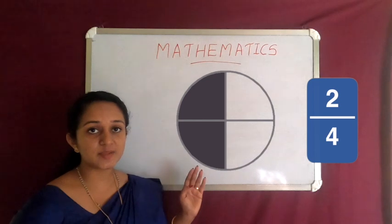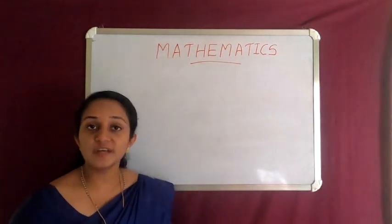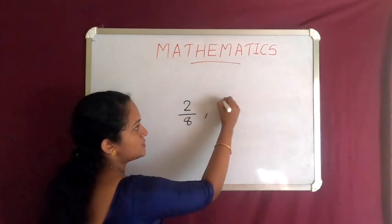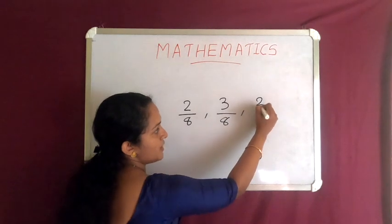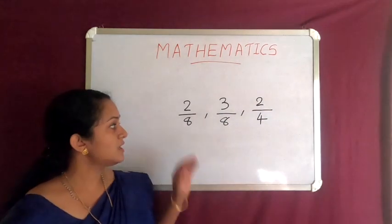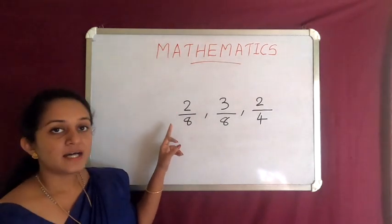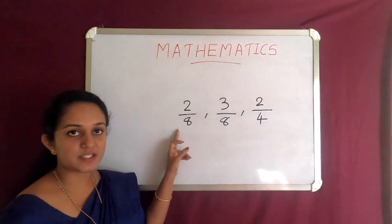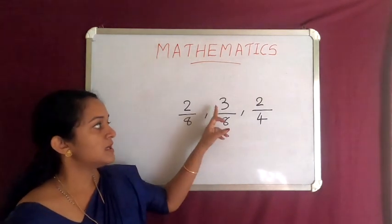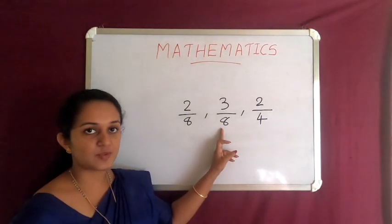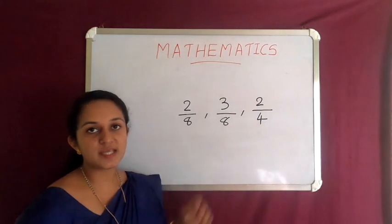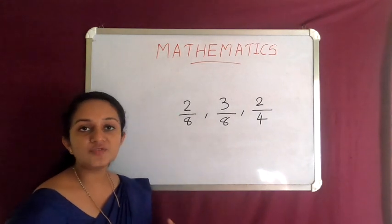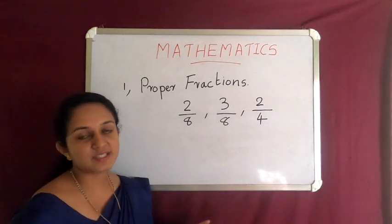And the total number of equal parts is four, so the fraction is two by four. We have learned so many fractions in this section: two by eight, three by eight, and two by four. In all of these fractions, the numerator is smaller than the denominator — for example, two is smaller than eight, and three is smaller than eight. Such fractions where the numerator is smaller than the denominator are called proper fractions. All the fractions we studied so far are proper fractions.